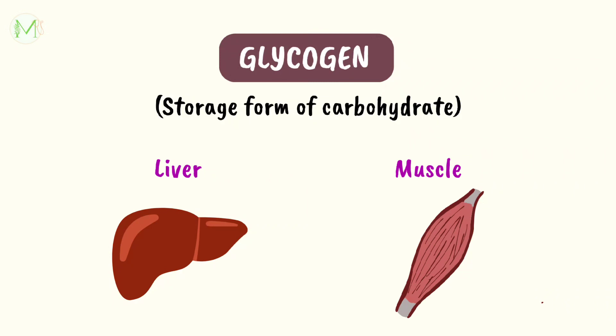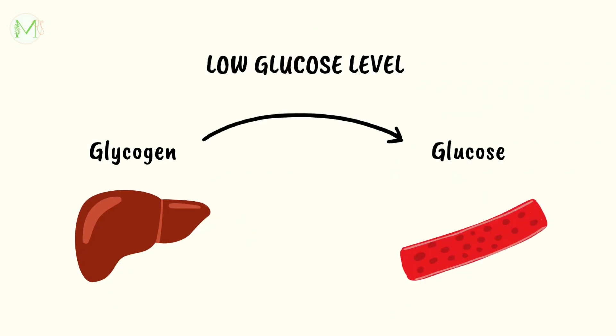And when we starve, the glycogen which has been stored in the liver and muscle gets converted into glucose and it will be released into the bloodstream again.